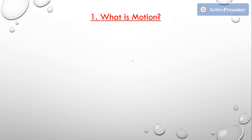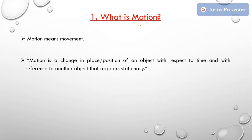What is motion? In the earliest standard, you have studied that motion is nothing but movement. But in technical language, motion is a change in position or place of an object with respect to time and also with reference to another object which appears stationary. Basically, it's a movement.